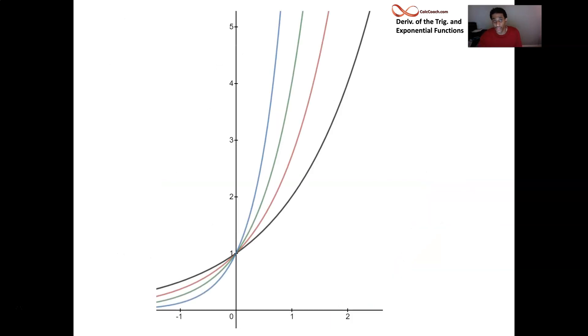Here's e to the x drawn in with a bunch of other exponential functions. I have e to the x in red again. There's some functions that grow faster than it, just need a bigger base. So 4 to the x and 8 to the x, they're all drawn in there. And then there's a function that grows slower than it that has a smaller base. e is 2.71, so 2 to the x. I want you to notice the slope of these functions as they go through the y-axis at x equals zero and y equals one. At that point, they all have different slopes.